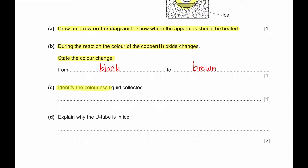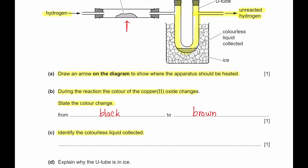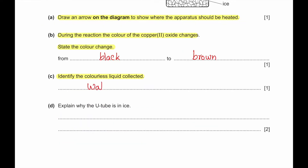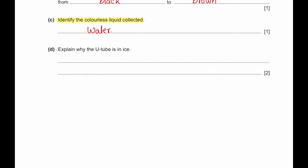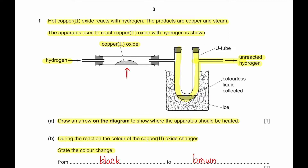Part C: Identify the colorless liquid collected. The colorless liquid collected is water. Part D: Explain why the U-tube is in ice. The U-tube is in ice so that the steam produced from the reaction of copper oxide with hydrogen can be cooled down.